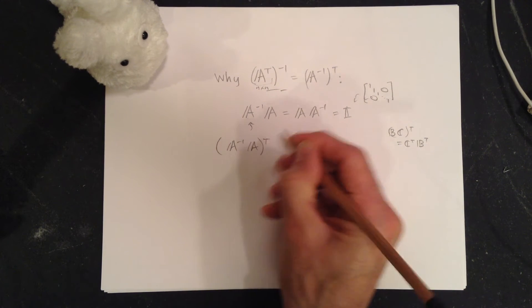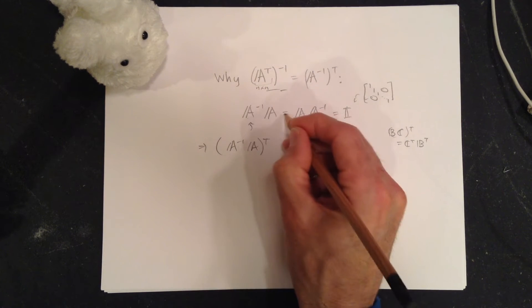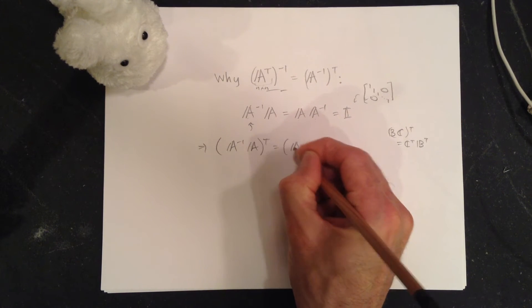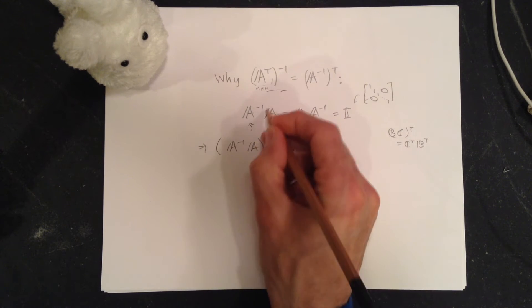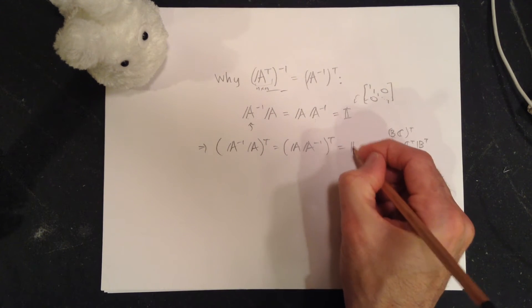We're going to take the transpose of all of these characters here. This has to be equal to this. Take the transpose, transpose, identity transpose.